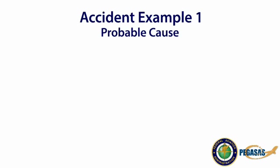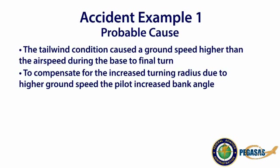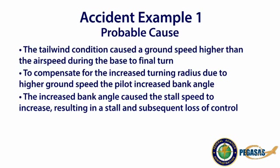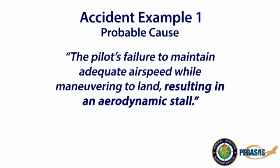During the evaluation, the NTSB determined the probable cause to be the tailwind condition, which caused a ground speed higher than the airspeed during the base to final turn. To compensate for the increased turning radius due to the higher ground speed, the pilot increased the bank angle. The increased bank angle caused the stall speed to increase, resulting in a stall and subsequent loss of control. The NTSB determined the probable cause to be the pilot's failure to maintain adequate airspeed while maneuvering to land, resulting in an aerodynamic stall.